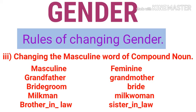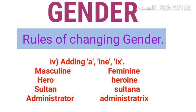The fourth rule is that we add '-ine' or '-ina' when changing from masculine to feminine gender. For example, the word 'hero' becomes 'heroine' — we add '-ine' to the masculine gender. The word 'sultan' becomes 'sultana'. So this is the fourth rule of changing masculine into feminine gender.